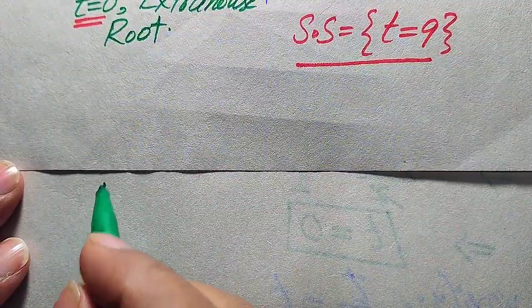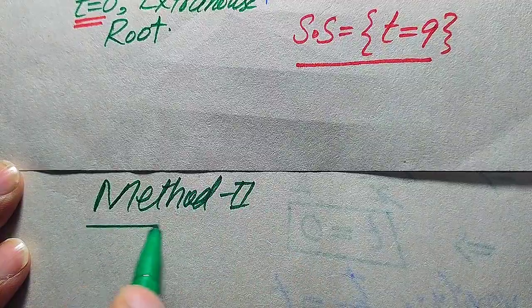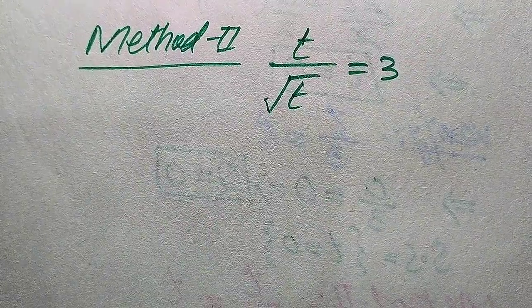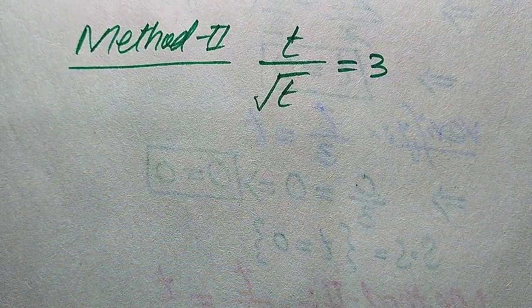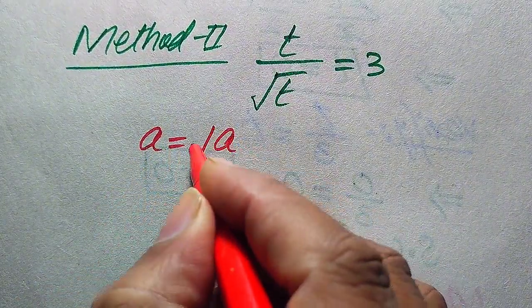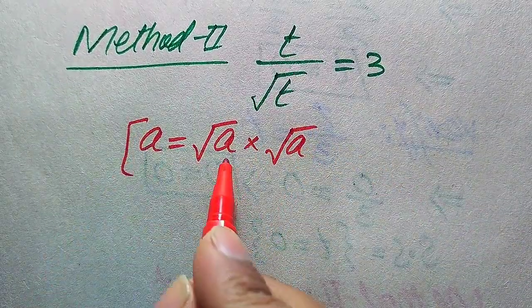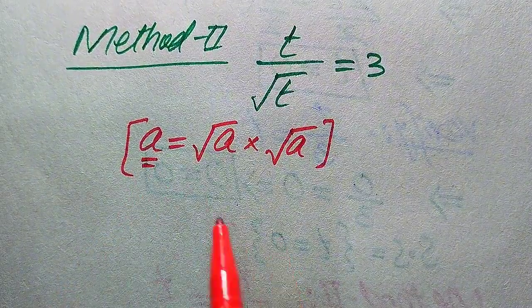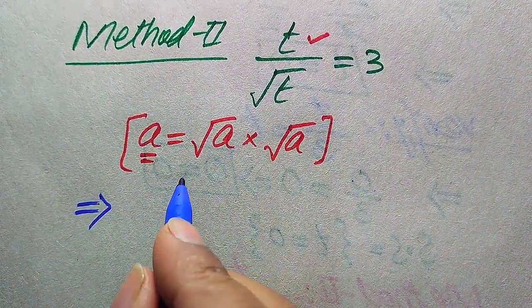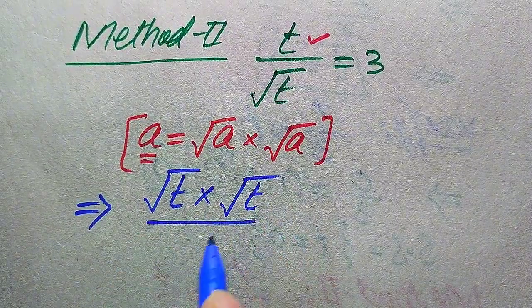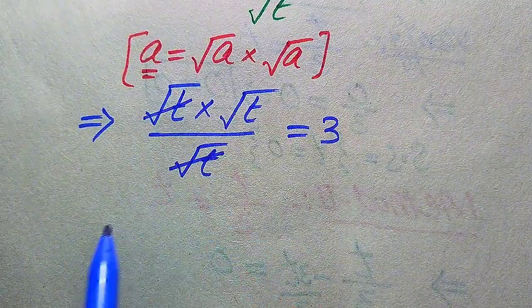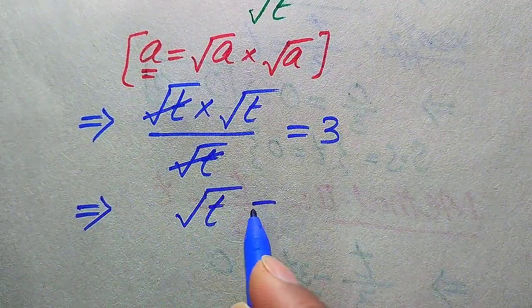For Method 2, we use the rule that any number a can be written as square root of a times square root of a. Applying this, we rewrite t as square root of t times square root of t. The given equation t divided by square root of t equals 3 becomes (square root of t times square root of t) divided by square root of t equals 3. The square root of t in the numerator and denominator cancel.